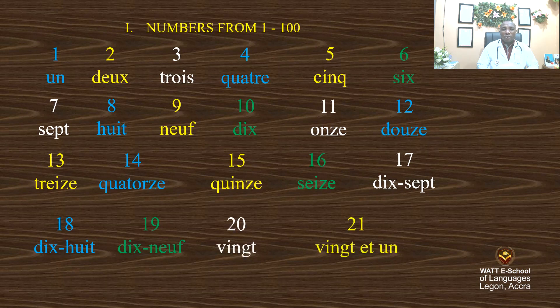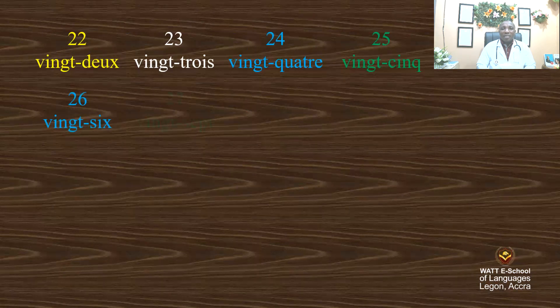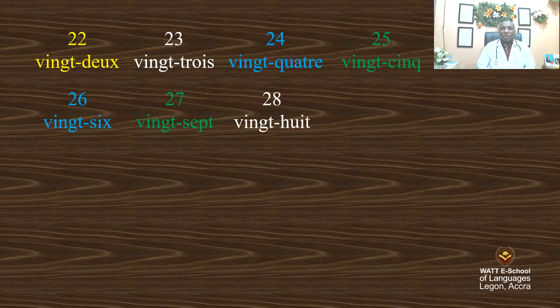Look at how 21 is written: 21, 22 — here there is no E — 23, 24, 25, 26, 27, 28, 29.